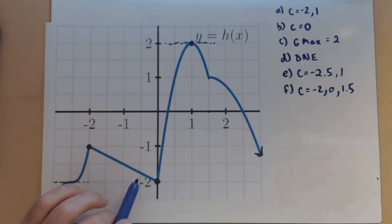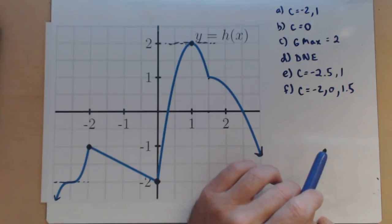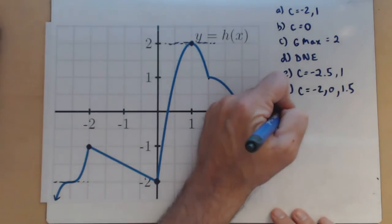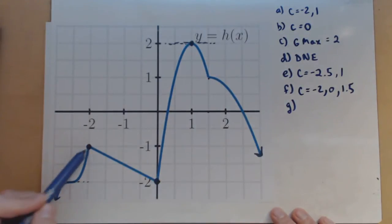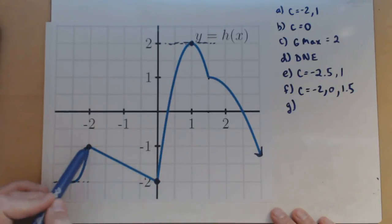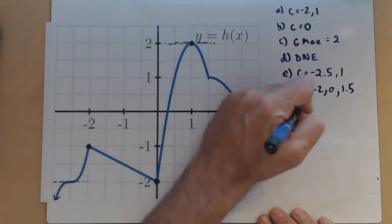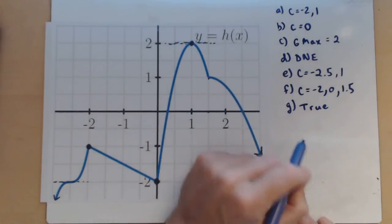Let's look at our last couple of questions. G: true or false — every relative maximum and minimum of h occurs at a point where the derivative is 0 or does not exist. And that is true. Our local maxes and our local mins occurred at places where our derivative either did not exist or was 0. We're going to see that those are going to be called our critical values or our critical points.